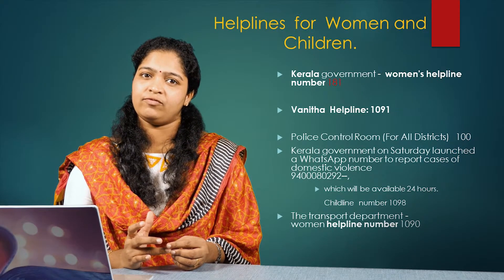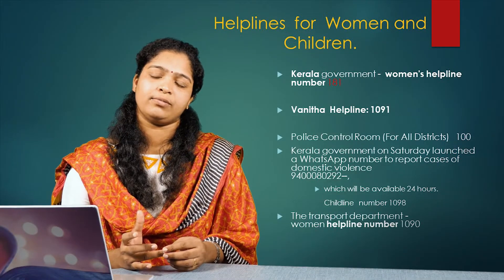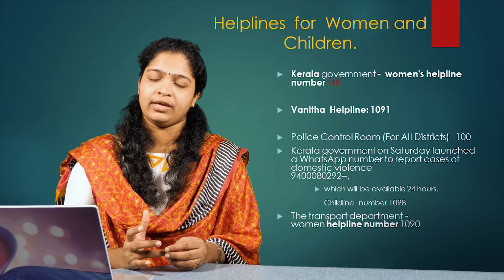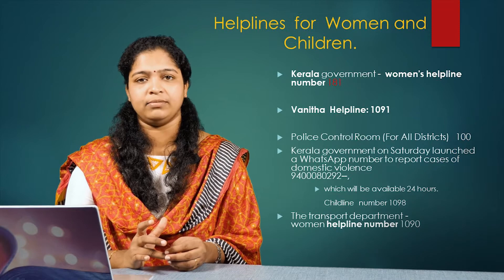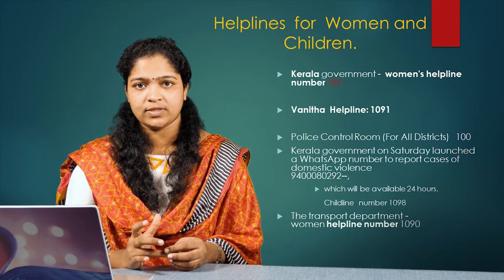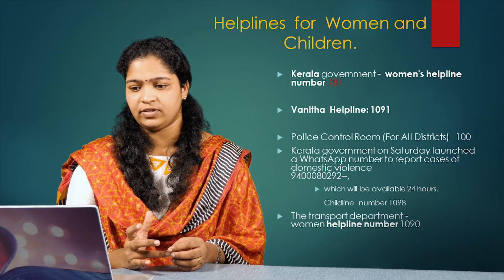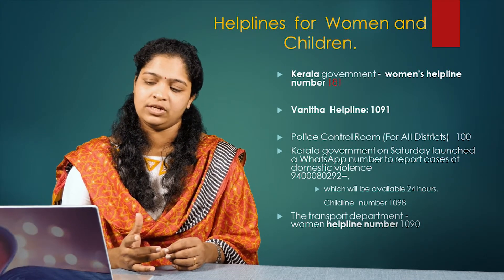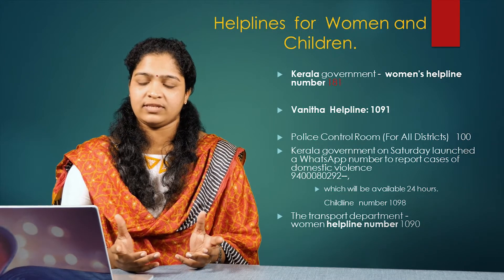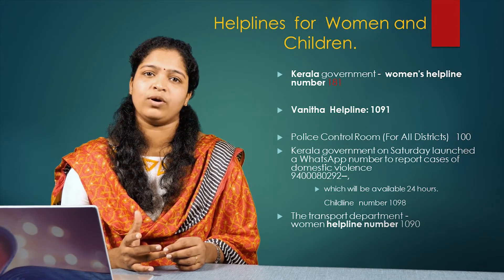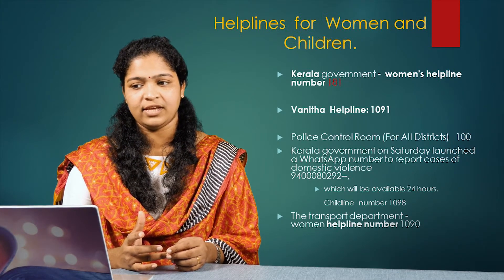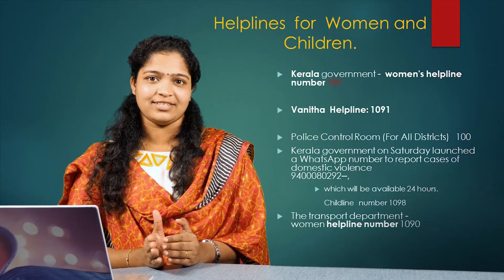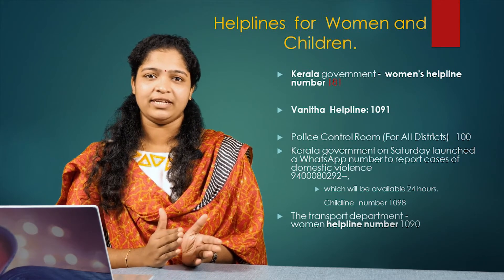Next comes the helplines for women and children. The Government of Kerala initiated a women's helpline number, 181. If women and children are in danger, they can directly call 181 for help. The Government of Kerala along with Kerala Police also initiated helpline number 1091. Help can also be sought from the police control room at 100. The Kerala government has also initiated a WhatsApp number providing 24-hour facility service. There is also a child helpline number, 1098, and the Kerala Transport Department initiated a women's helpline at 1090.